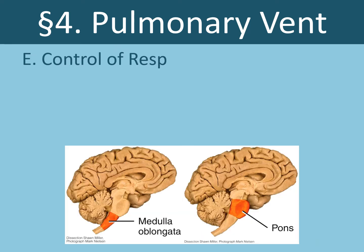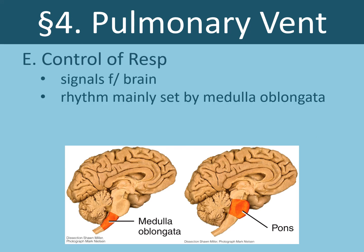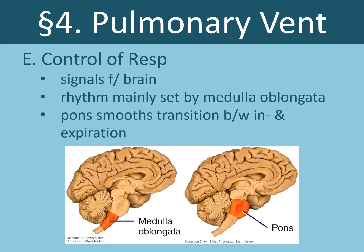How do we control pulmonary ventilation? From signals from our brain. The normal rhythm of breathing is set by the medulla oblongata, one of the three parts of the brain stem. The pons also helps control pulmonary ventilation — its function is to smooth the transition between inspiration and expiration. All of this can be overridden by the cerebrum when we are taking voluntary breaths.